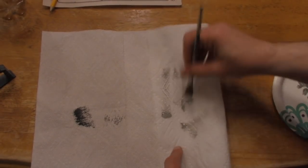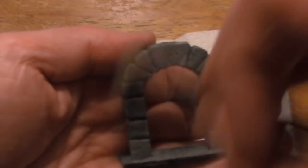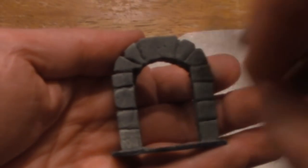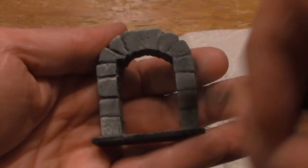Next comes the dry brushing. I take some light gray, wipe it off on a paper towel, and then lightly brush over the entire piece. Try and hit especially the edges.